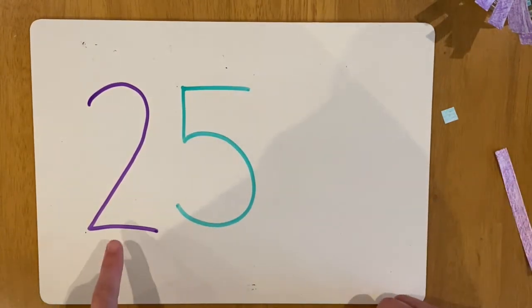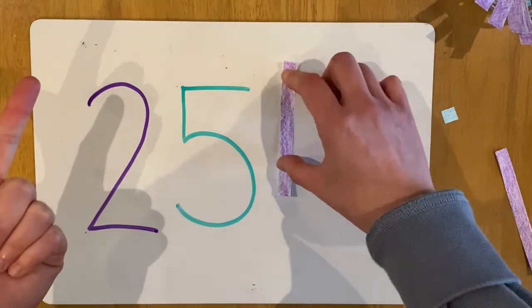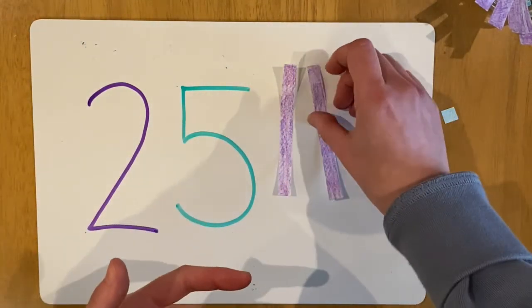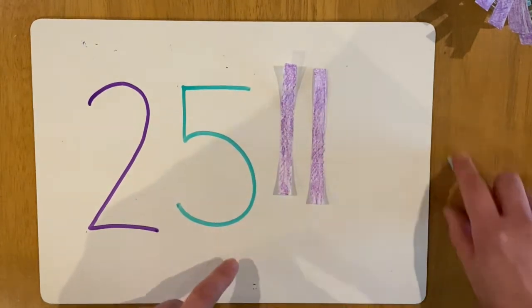So to make 25 we need 10, 20, two tens. And we need 5 ones.